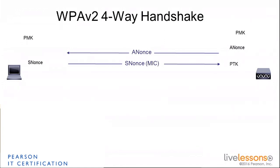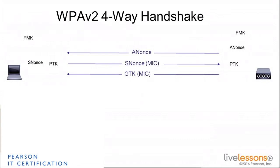The access point is going to generate the pairwise transient key (PTK) from the PMK, and then let the client do the same on its side. Once that's done, the access point is going to use the PTK to encrypt the GTK and do a checksum using the message integrity check, then send that encrypted frame down to the client. The client checks the MIC using the same PMK, and if it matches, it proves that the access point has the right PMK.